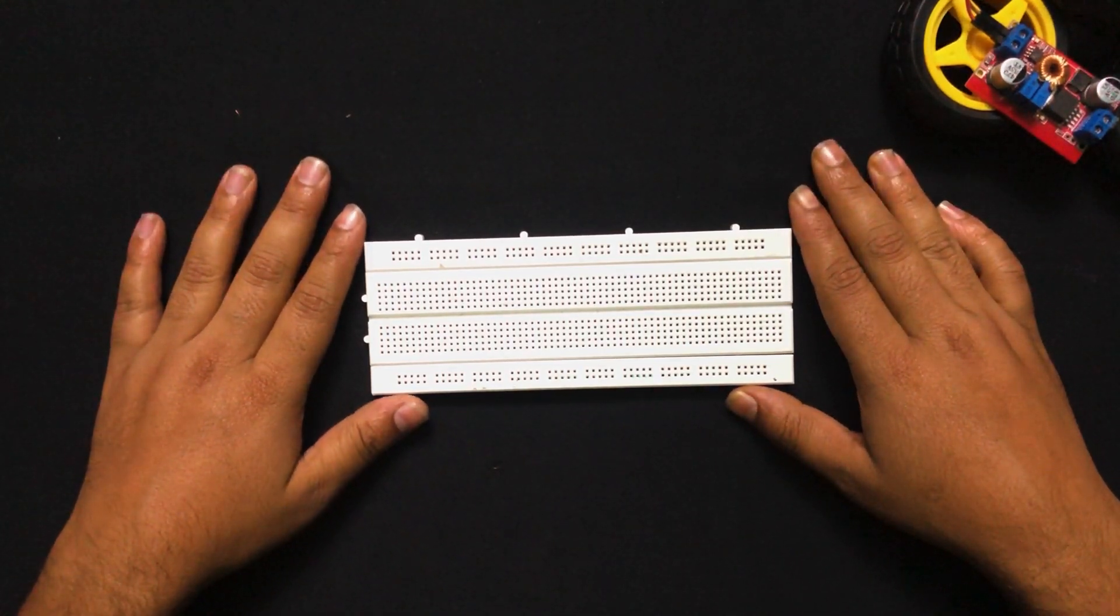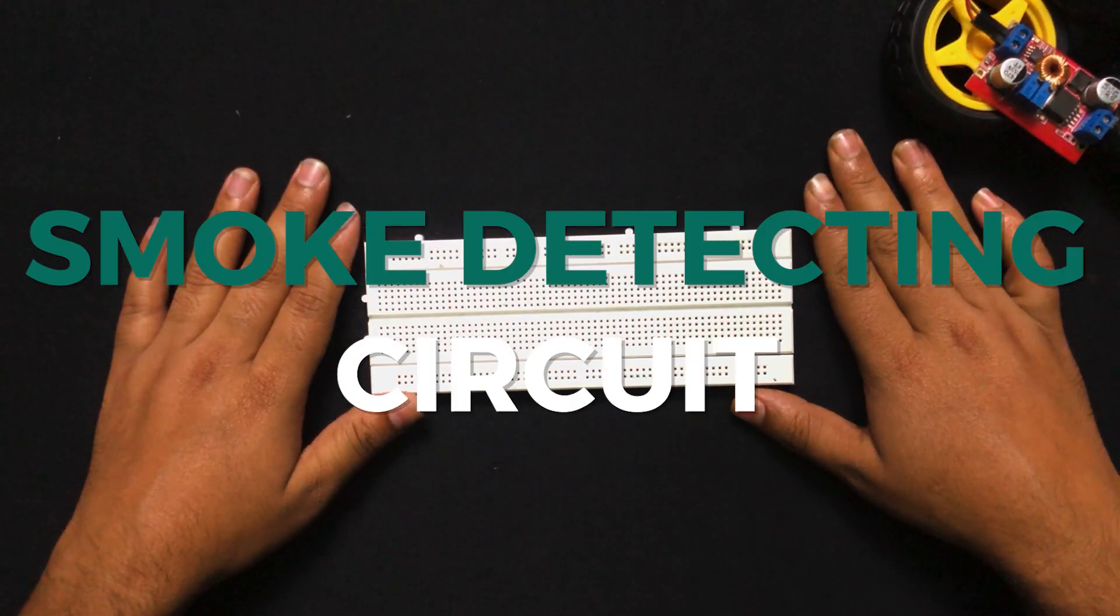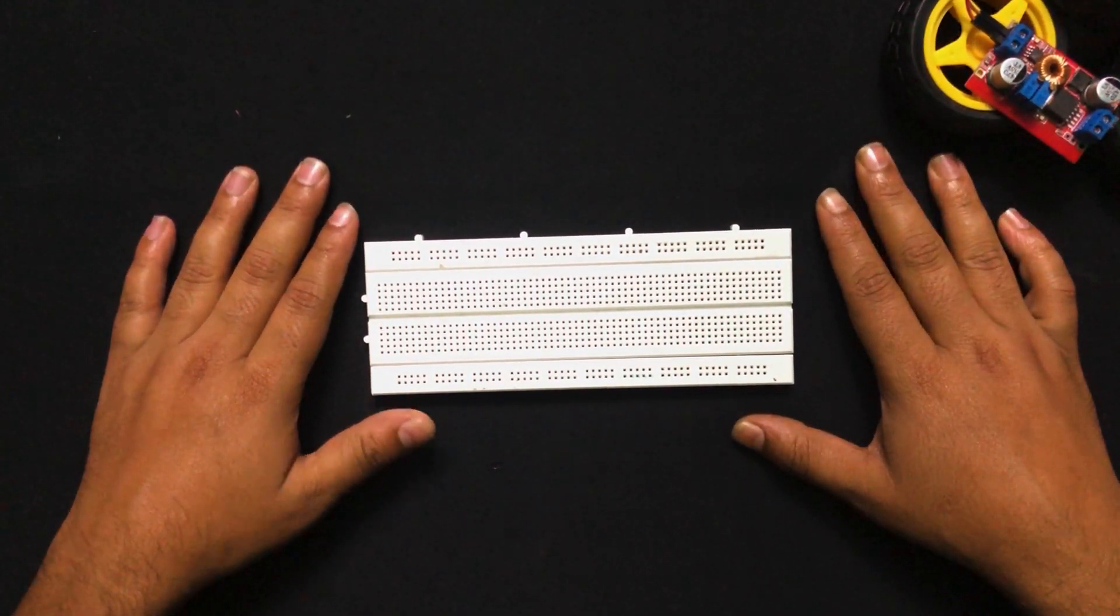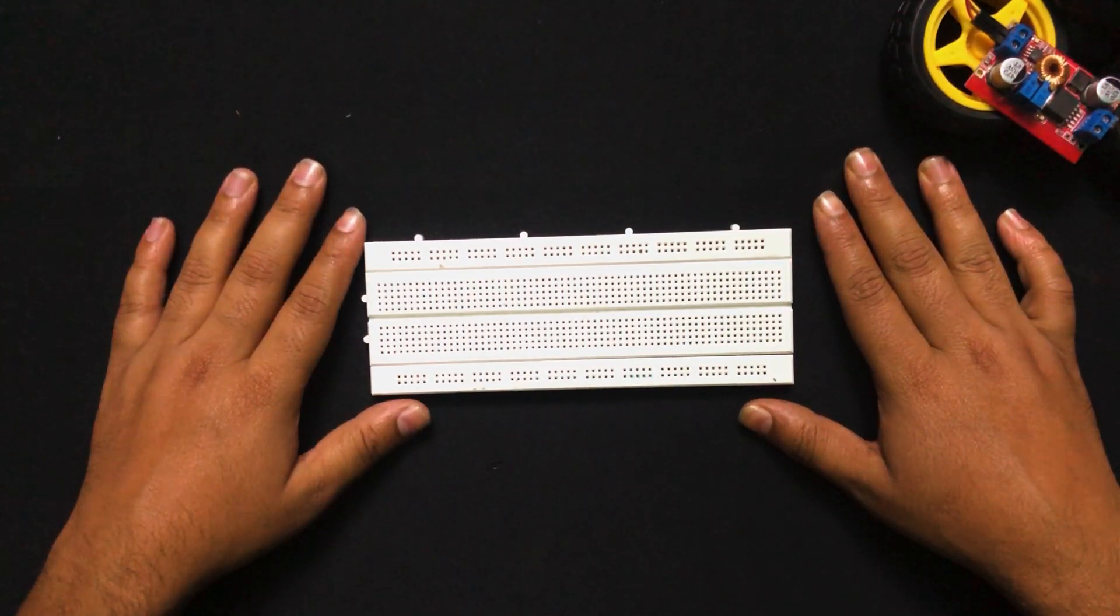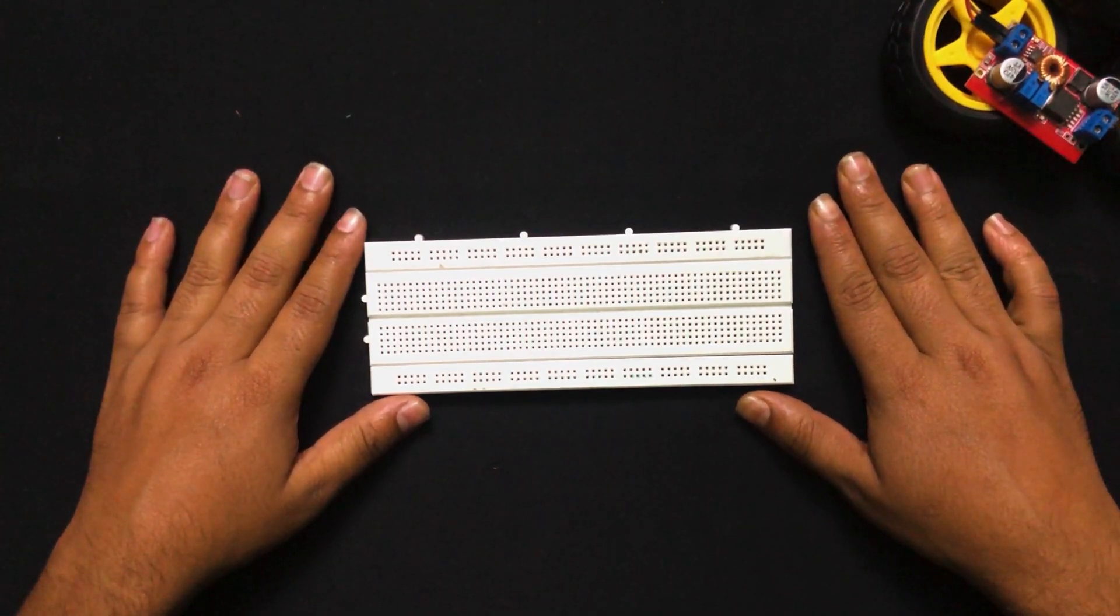Welcome back to another video. In this video we're going to learn how to make a smoke detecting circuit. As you can understand by the name, this circuit can be used for detection of smoke. The smoke can be usually LPG or butane in our household. Without wasting any further time, let's dig into the video.